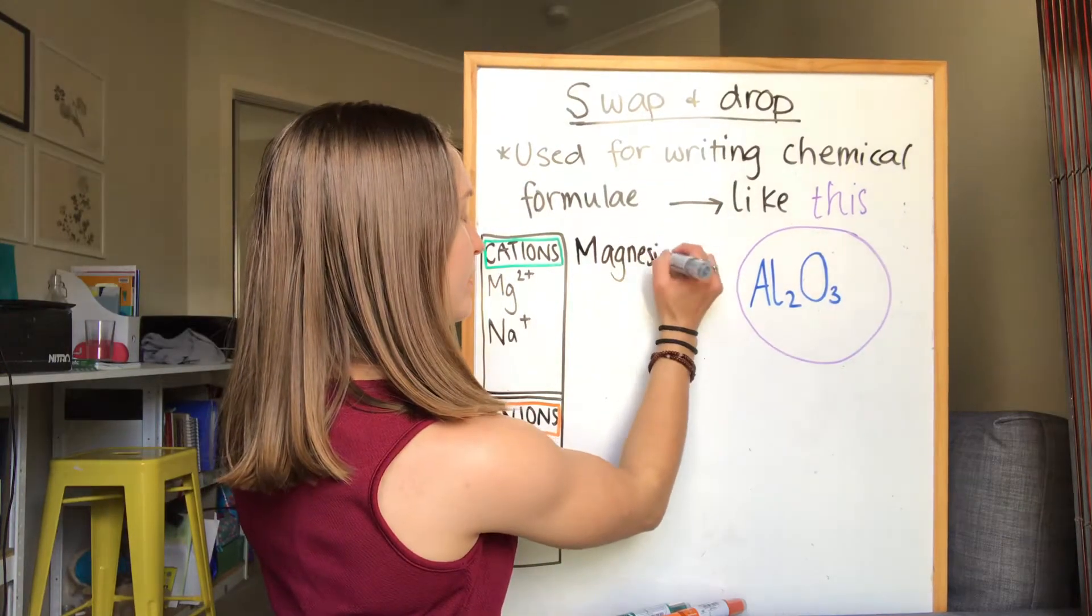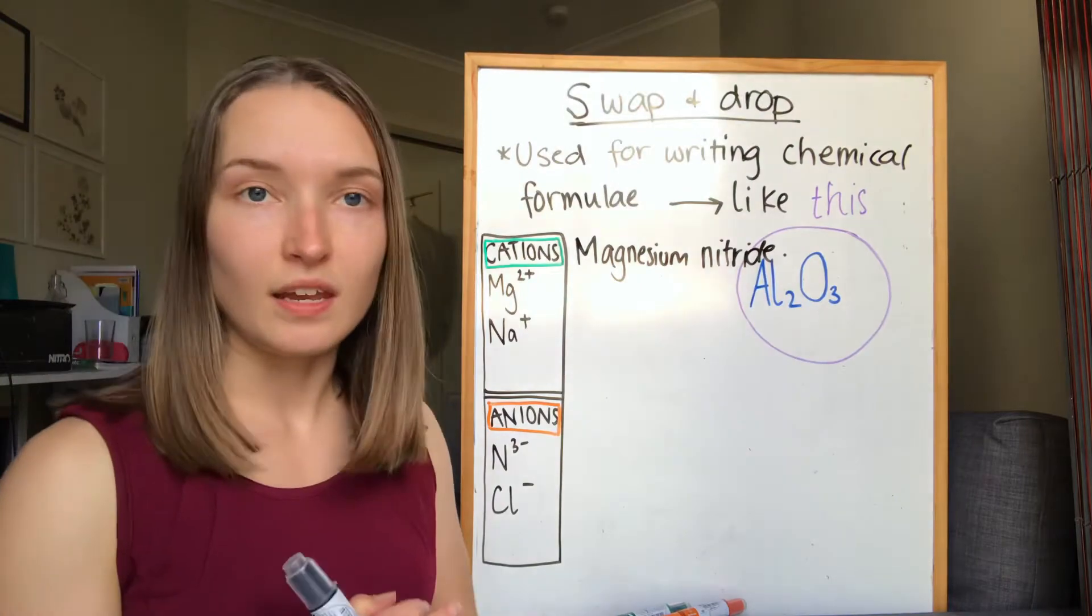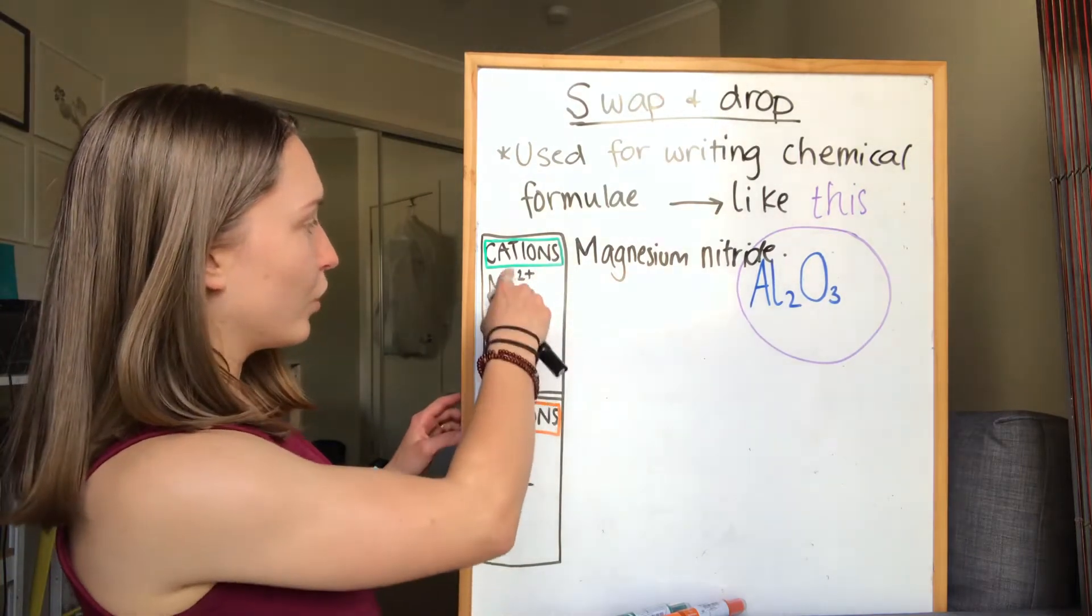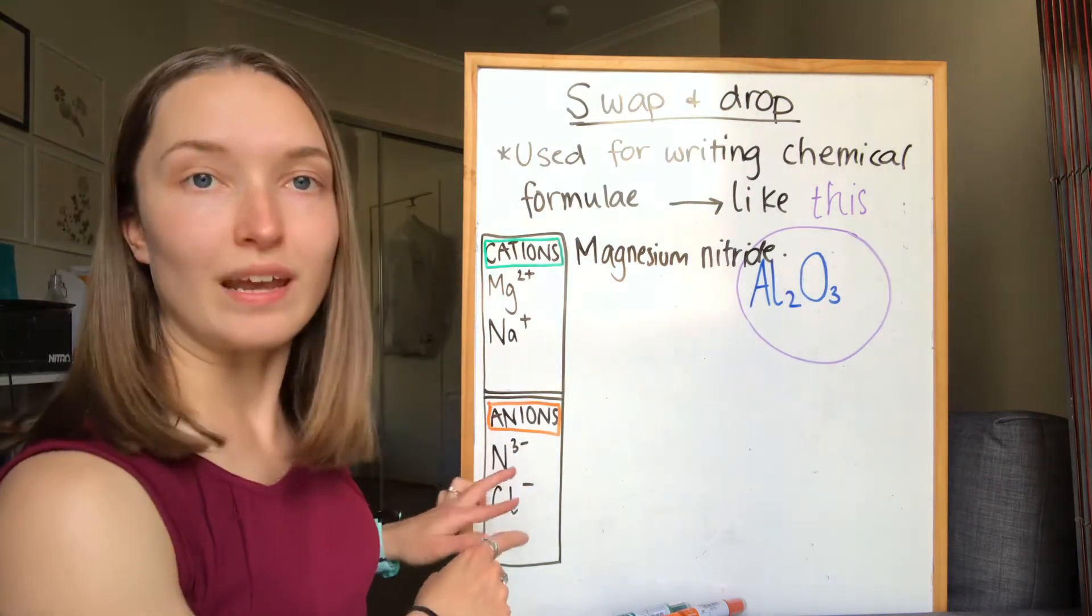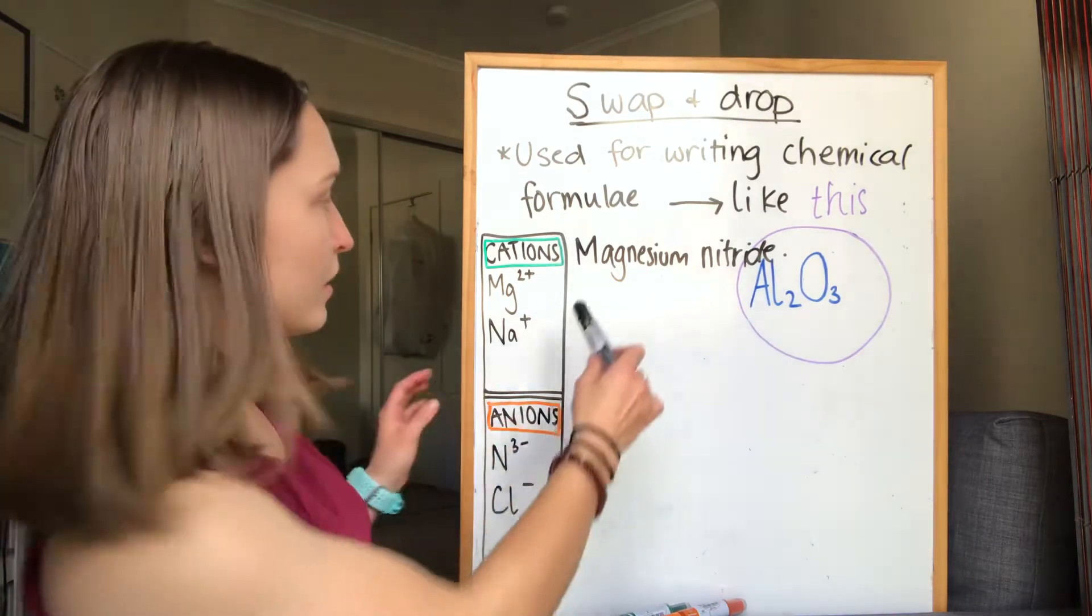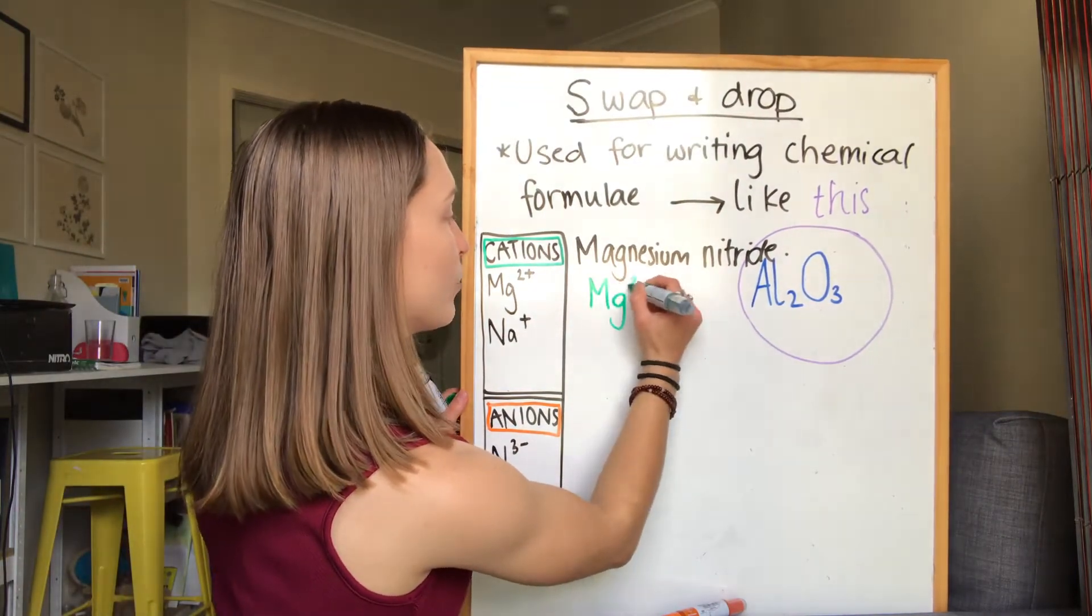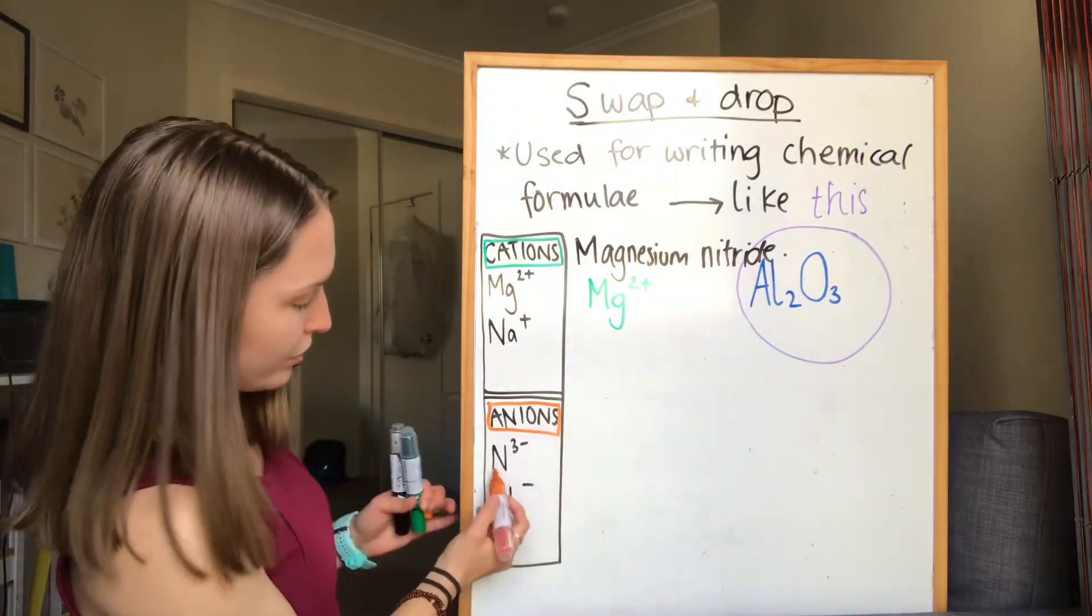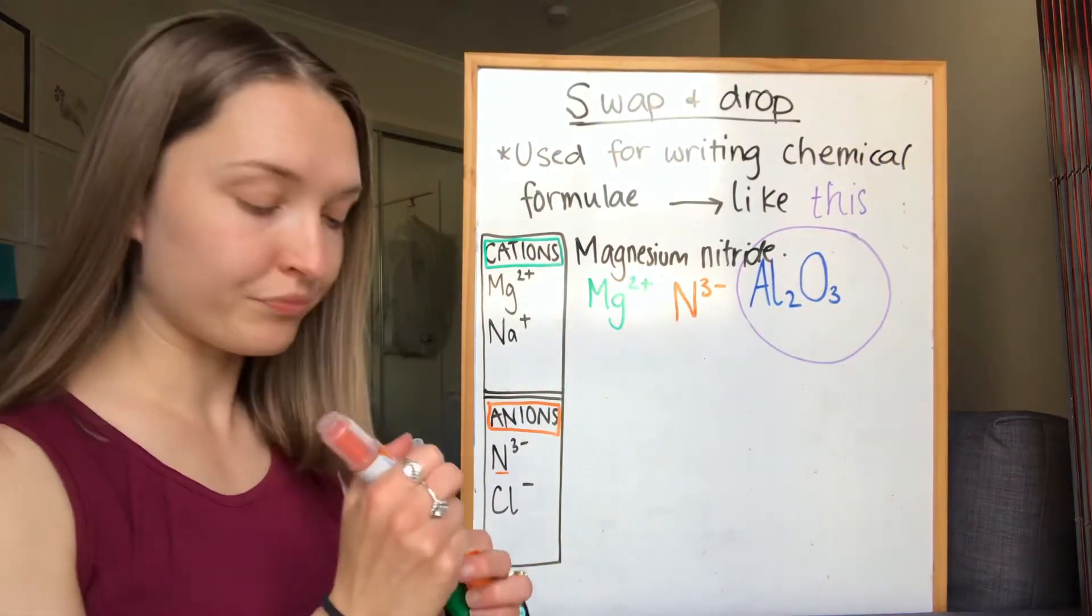In the test or practice example you're doing, you should have access to a table which lists cations or positive ions and anions or negative ions. We look at the formula we need to make. The first one is always going to be the cation, so magnesium, here it is, we write that down. That's step one: magnesium which has a two plus charge. And then our anion, nitride, which is down here, and nitride has a three negative charge.